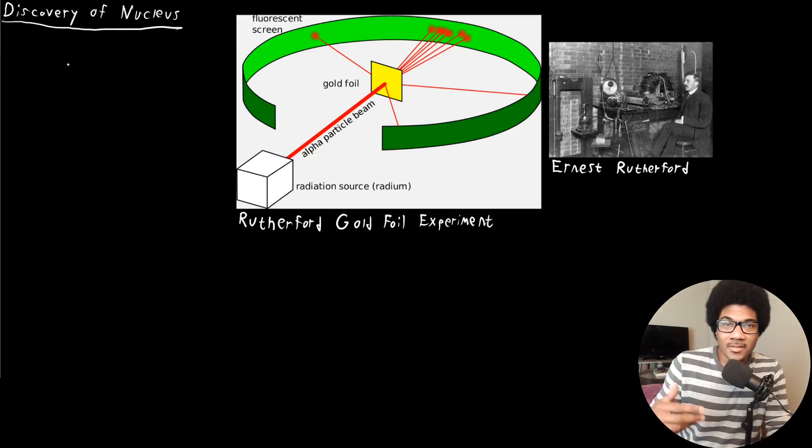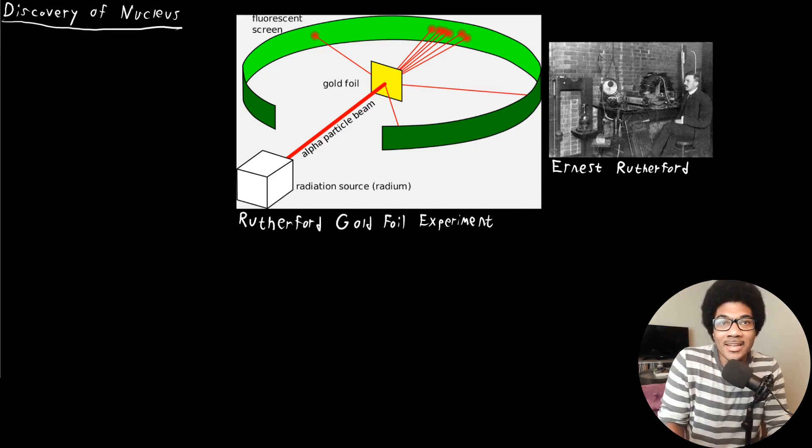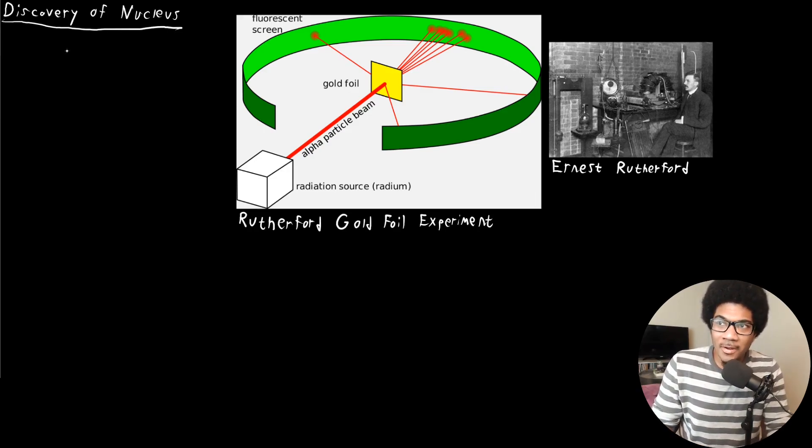In this video, we're going to discuss the discovery of the nucleus. At this point, we've discussed Dalton's atomic theory from the early 1800s that established the atom as a building block of matter. And then we discussed the discovery of the electron from J.J. Thompson in the later 1800s that really was the first view into the fact that there are subatomic particles that exist. And he came up with a model for the atom called the Plum Pudding Model, where he imagined the atom as this sea of positive charge with these little negative charge particles embedded into it.